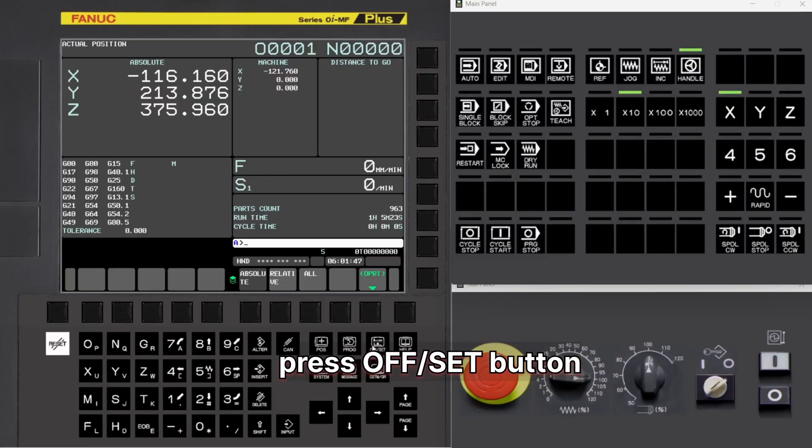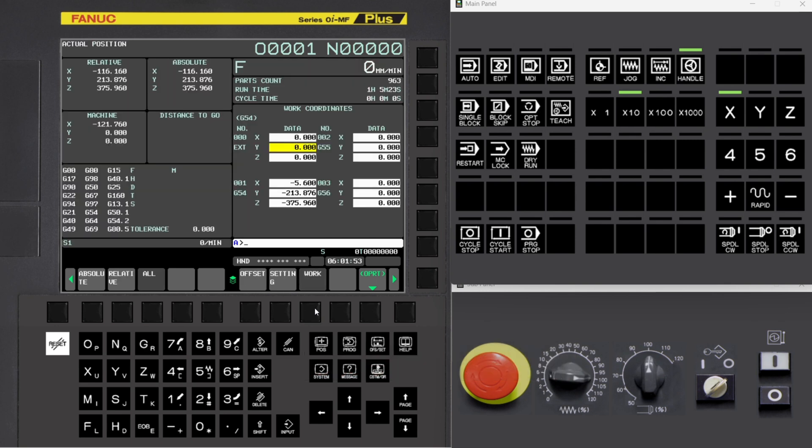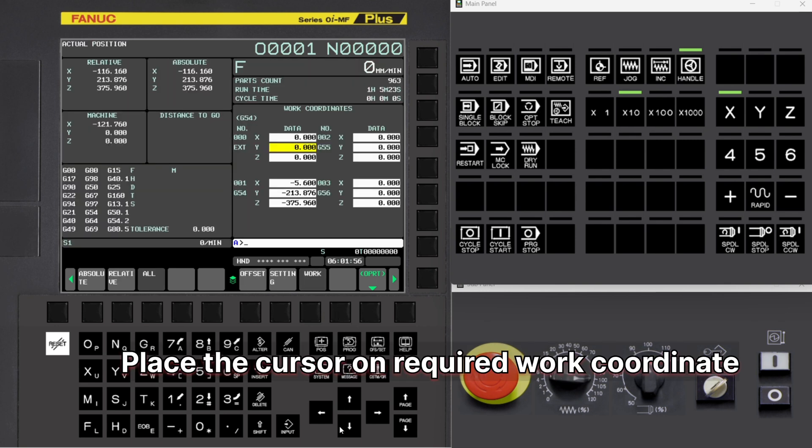Press Offset button. Press Work Soft Key. Place the cursor on required work coordinate.